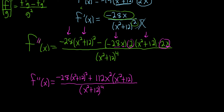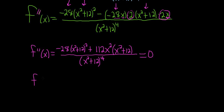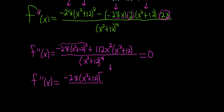Now we set f double prime equal to 0 and factor. We can factor out negative 28 as well as (x squared plus 12). What remains inside the bracket: we already have the negative 28 and one (x squared plus 12) factored out, so we need another copy of (x squared plus 12), which gives (x squared plus 12) squared when multiplied. Pulling out negative 28 from the second term leaves a negative sign and an (x squared plus 12).